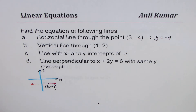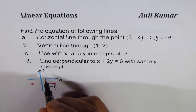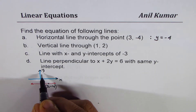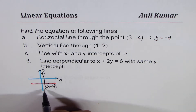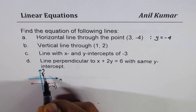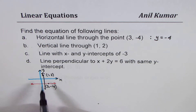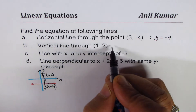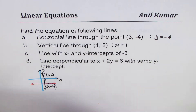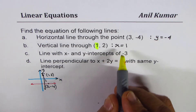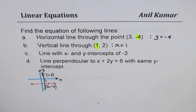Now let's look at the second one: the vertical line through (1, 2). Let me sketch a vertical line on the same graph — the vertical line has X value of 1. The point (1, 2) lies on this line. You find that the X value is always 1, and therefore the equation of this line is X = 1. For a vertical line we look at the X value, which remains constant; for a horizontal line we look at the Y value, which remains constant.